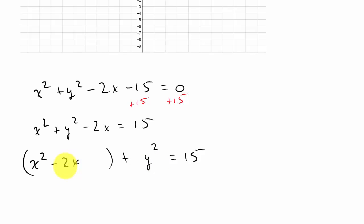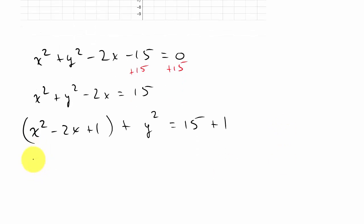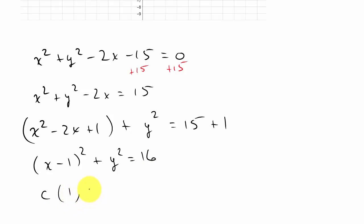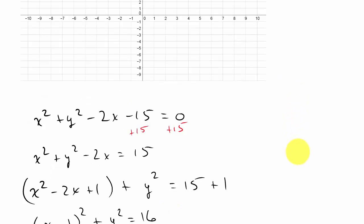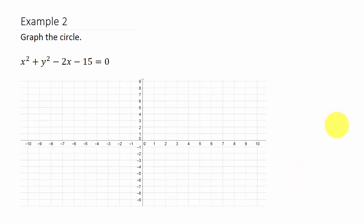From the first example, we take the number in front of x, which is 2, halve it to get 1, then square it to get 1. We add 1 to this side, so we also add 1 to the other side. This gives us (x minus 1) squared plus y squared equals 16.